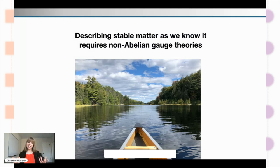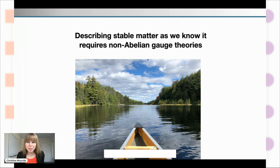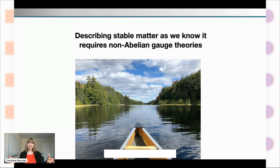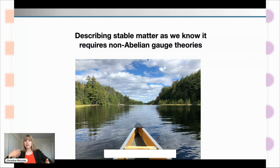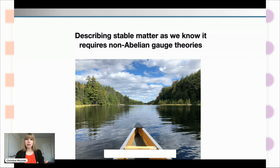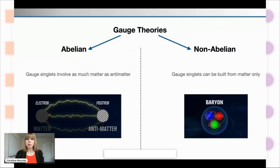Since you really need non-abelian gauge theories to explain protons and neutrons, the ability to simulate a non-abelian gauge theory is absolutely key to unlock the potential of quantum computing for gauge theories. To describe stable matter as we know it — matter in a canoe, in a tree, on a lake — matter that consists of matter only with no antimatter involved, it really requires non-abelian gauge theory.